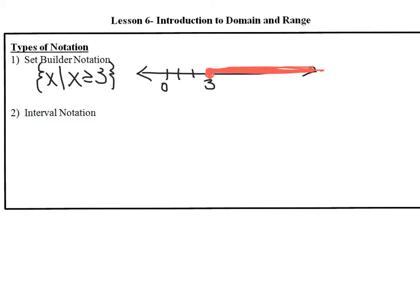Let's try another one in set builder notation. What if we have the set of all x such that — that vertical line means 'such that' — this time I'm going to put the x in the middle of my definition. I want x greater than 0 but less than 4. So in essence I want all values of x that are between 0 and 4. Notice that the endpoints 0 and 4 are not included in my set.